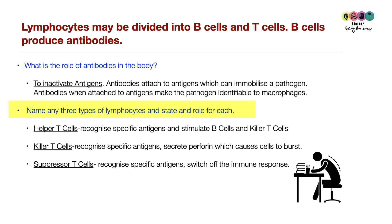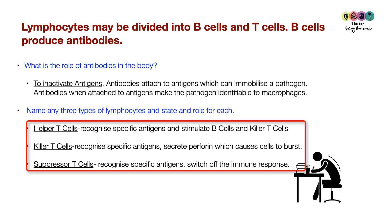Name three types of lymphocytes and state the role of each. Helper T cells recognise specific antigens and stimulate B cells and killer T cells. Killer T cells recognise specific antigens and secrete perforin, causing infected or cancerous cells to burst and die. Suppressor T cells recognise specific antigens and are important for switching off the immune response.